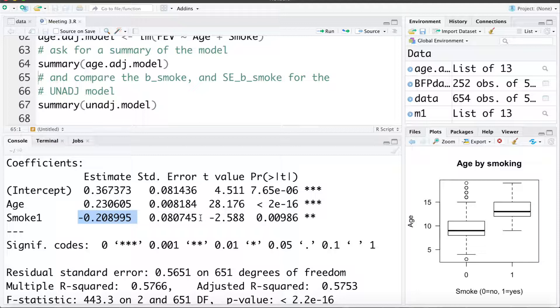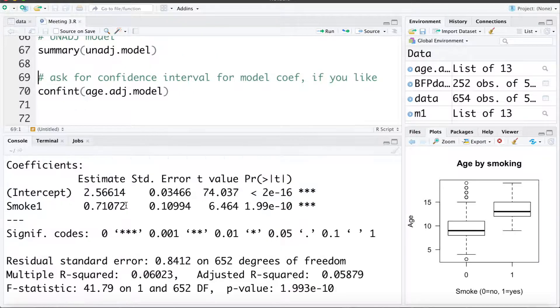We also said sometimes we want to look at the standard error. We can see the standard error of the coefficient is 0.08. Just remember those two values: the smoking coefficient of negative 0.21, standard error of 0.08. Comparing those to the unadjusted model we can see the coefficient was 0.71, so quite a large change which we'd expect to see for a confounder. We can see the standard error when we adjust for age went from 0.11 down to 0.08.